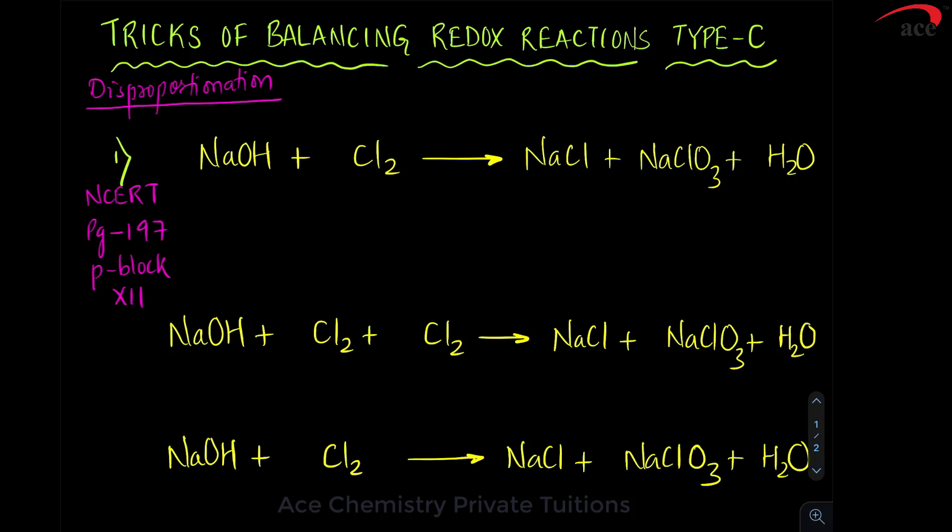In disproportionation, how are you supposed to deal with such type of reactions? First, you know what is disproportionation? Chlorine is in 0 oxidation state, it is minus 1 and chlorine is plus 5. That means at one place it is getting reduced, at the other place it is getting oxidized. If the same element is getting oxidized and reduced in the products, such a type of reaction is called as disproportionation.